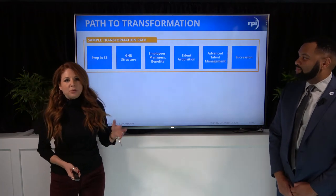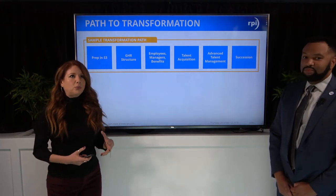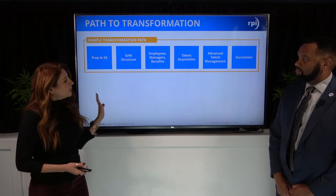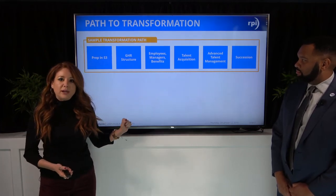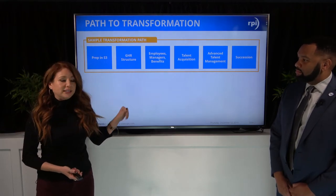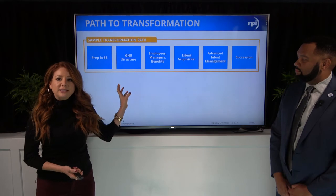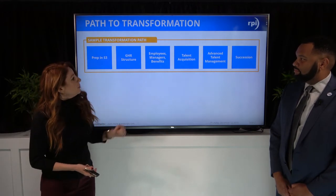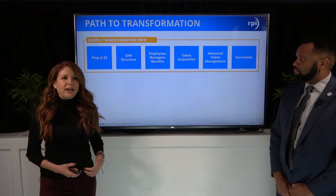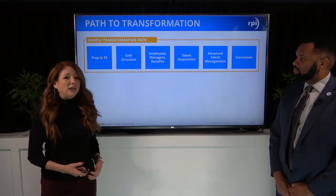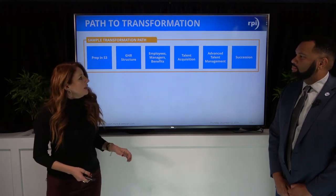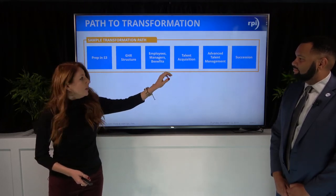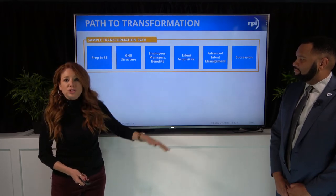What we have here is a common example. Whatever drives you to opening up different modules is unique to every client, but this is generally what we see or prescribe when there's no specific driver. You can do some work in your current system, really think about how to set up your structure — which doesn't have to follow what you have today — and talk through what that employee, manager, and benefit enrollment experience should look like, what your wish list is, and what you're lacking. Then move into talent management functionality modules like talent acquisition and other talent management pieces, with the final one being succession planning.